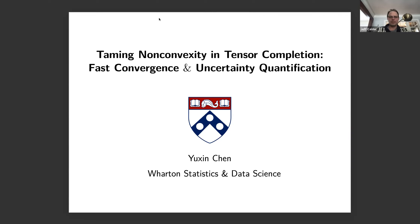He's an Associate Professor of Statistics and Data Science at the University of Pennsylvania. Prior to that, he had a position at Princeton for some years, was a postdoc at Stanford, and got his PhD also at Stanford. His research interests are in mathematics of data science, statistics, information theory, optimization, reinforcement learning, and applications to medical imaging, power electronics, and computational biology. Today he's going to talk about taming non-convexity in tensor completion — fast convergence and uncertainty quantification.